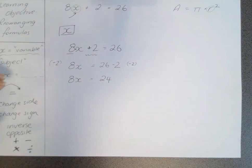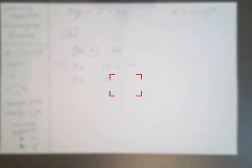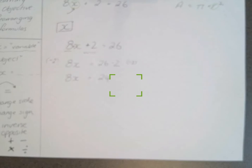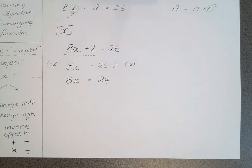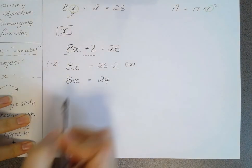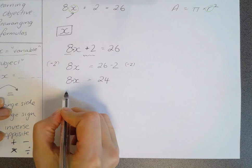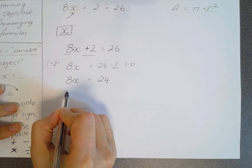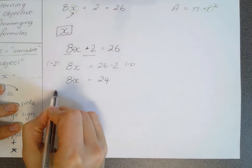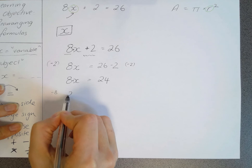Now we are left with 8x equals 24. And we need to figure out how to get rid of this little 8. And the 8 is actually multiplying by the x. So to get rid of it, remember our opposite sign of multiply is divide. So we're going to divide each side by 8. If we divide by 8, we would be left with just x.